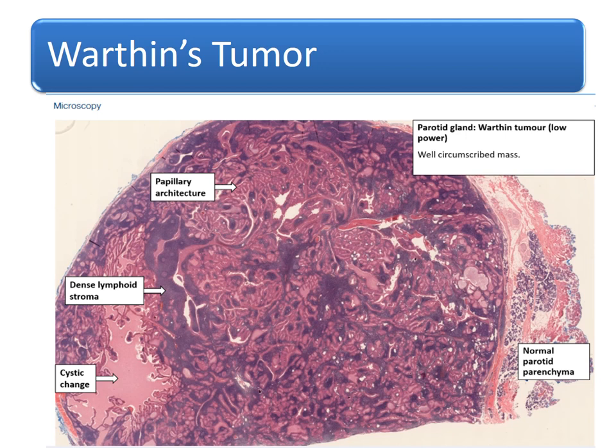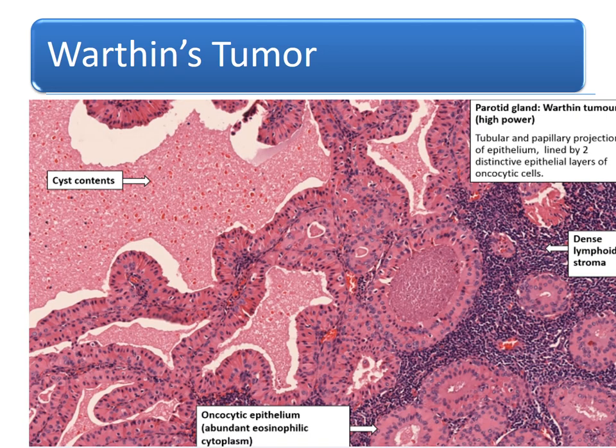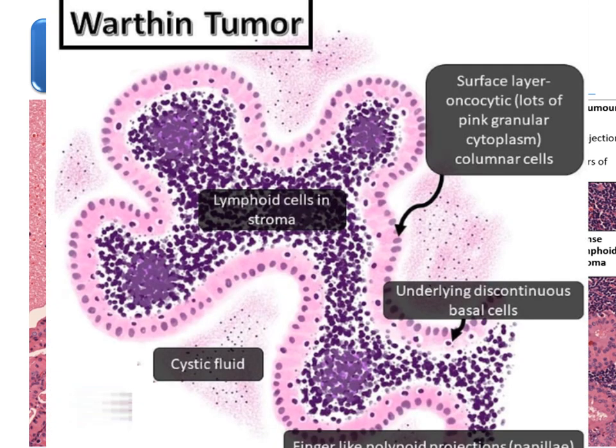Outside is normal parotid parenchyma. At closer view: cyst contents, oncocytic epithelium, abundant eosinophilic cytoplasm, and dense lymphoid stroma. Here is a clearer appearance of Warthin's tumour showing lymphoid cells in the stroma, cystic fluid, underlying discontinuous basal cells, and surface layer with pink granular cytoplasm of columnar cells.